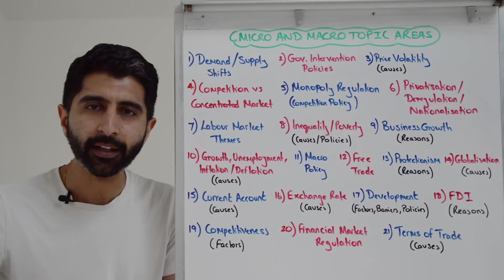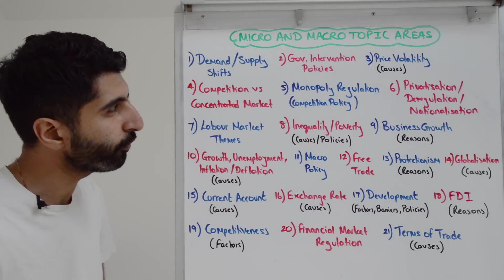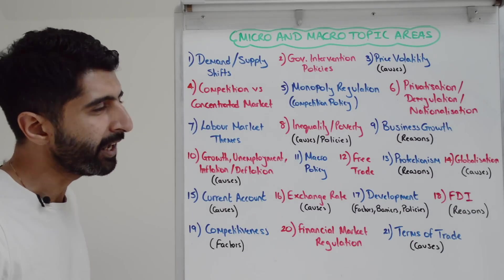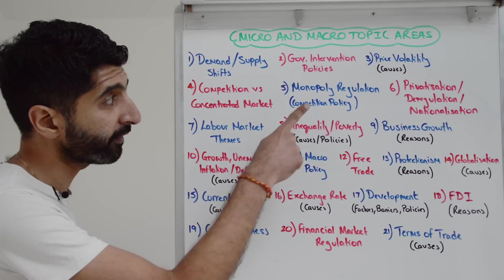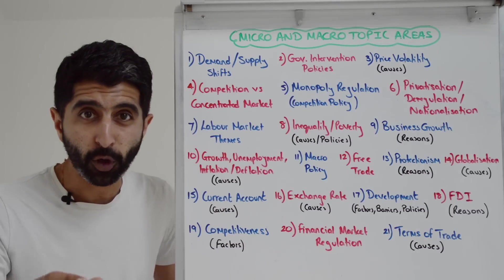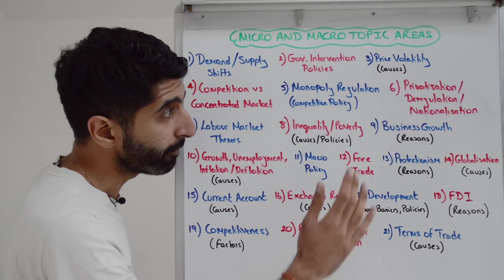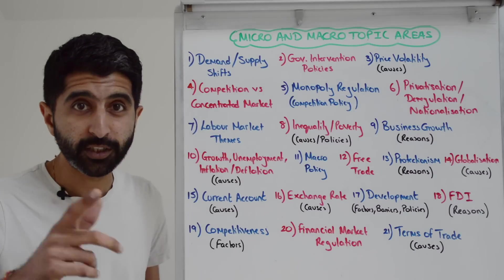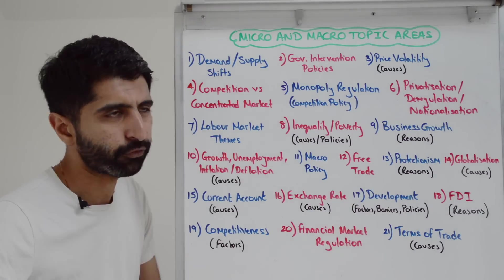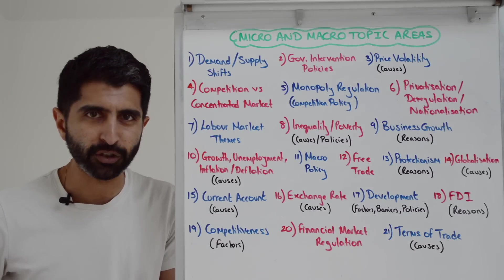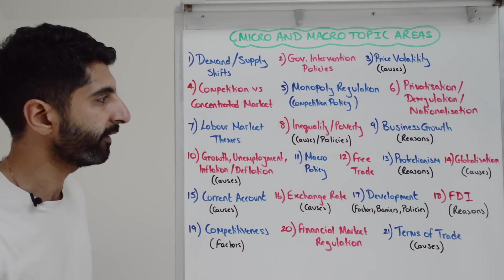Then we look at effects of a competitive market versus a concentrated market — these have very strong macro effects as well as micro effects. Same with monopoly regulation or competition policy, and even privatization and deregulation as more market-based approaches, and then the extreme which is nationalization — very big macro as well as micro effects there.